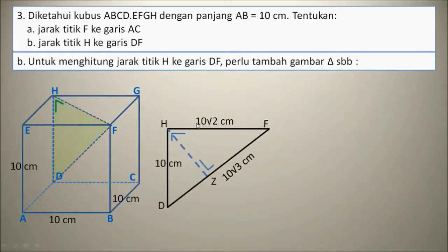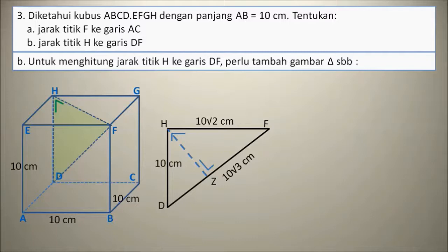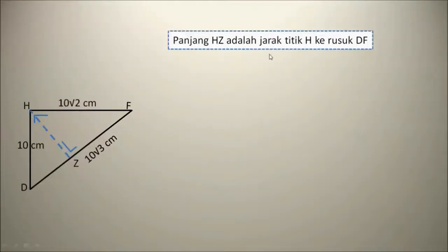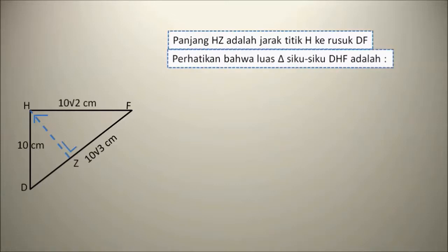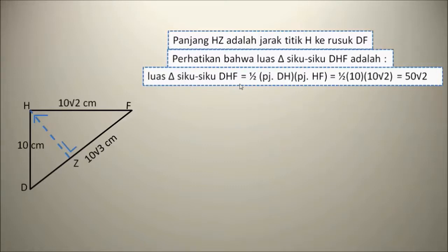Segitiga DHF siku-siku di H. Jarak dari H ke DF adalah HZ, di mana HZ tegak lurus dengan DF. DH adalah rusuk kubus 10, HF adalah diagonal bidang 10 akar 2, dan DF adalah diagonal ruang panjangnya 10 akar 3. Panjang HZ adalah jarak titik H ke rusuk DF. Perhatikan bahwa luas segitiga siku-siku DHF sama dengan setengah kali panjang DH kali HF, sama dengan setengah kali 10 kali 10 akar 2, sama dengan 50 akar 2.